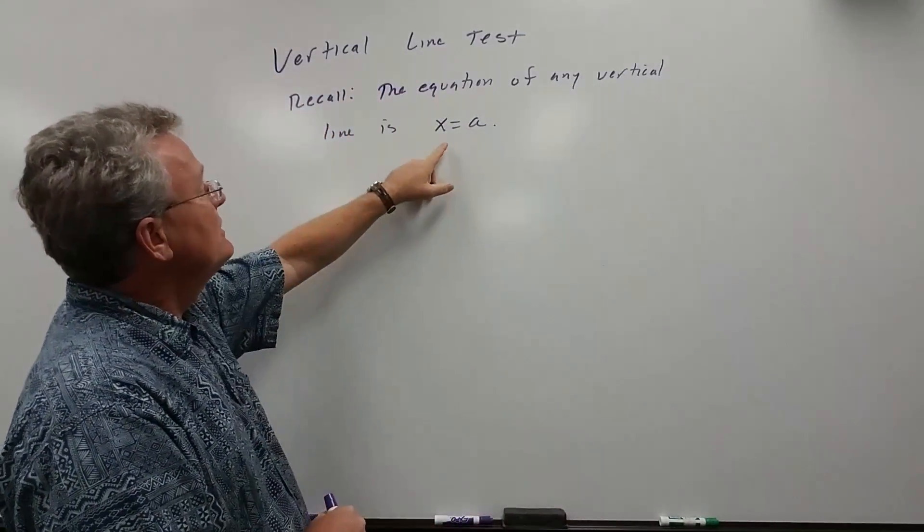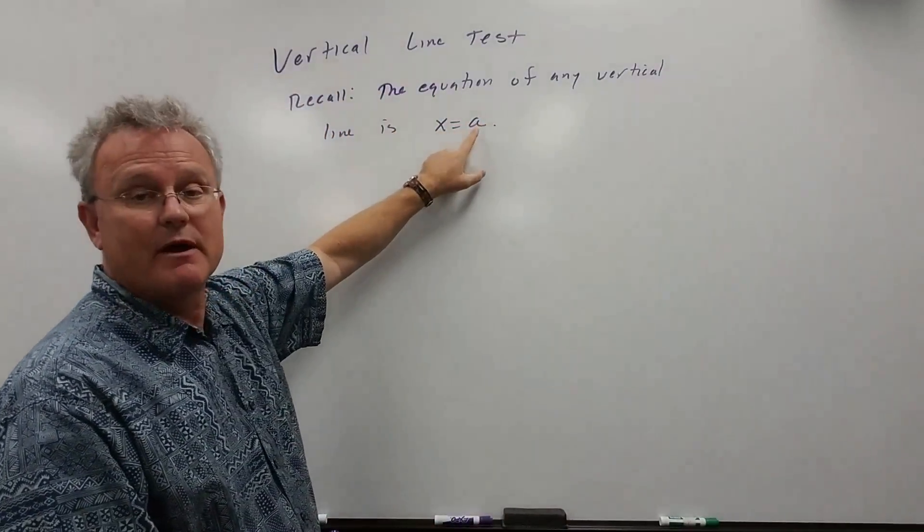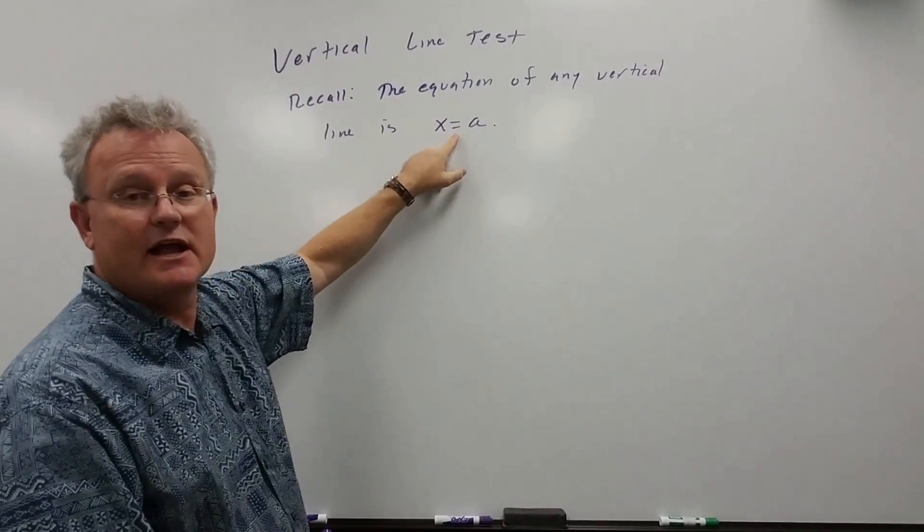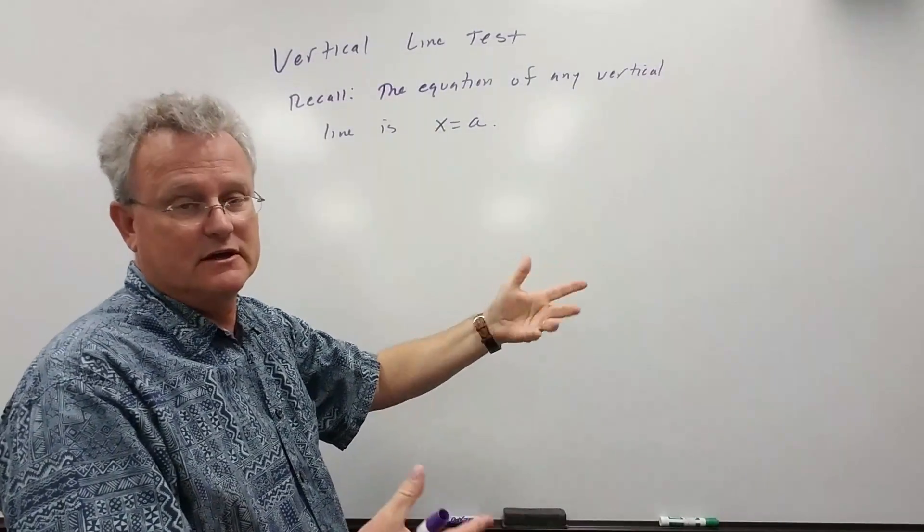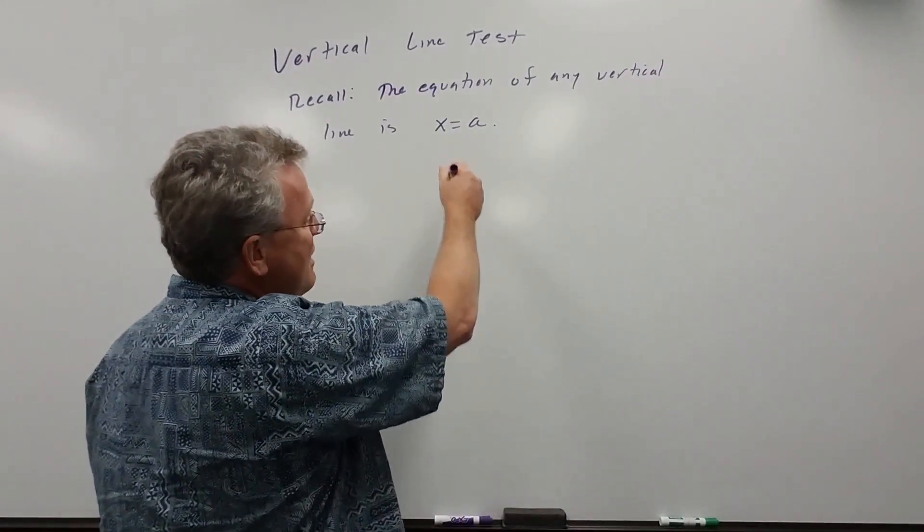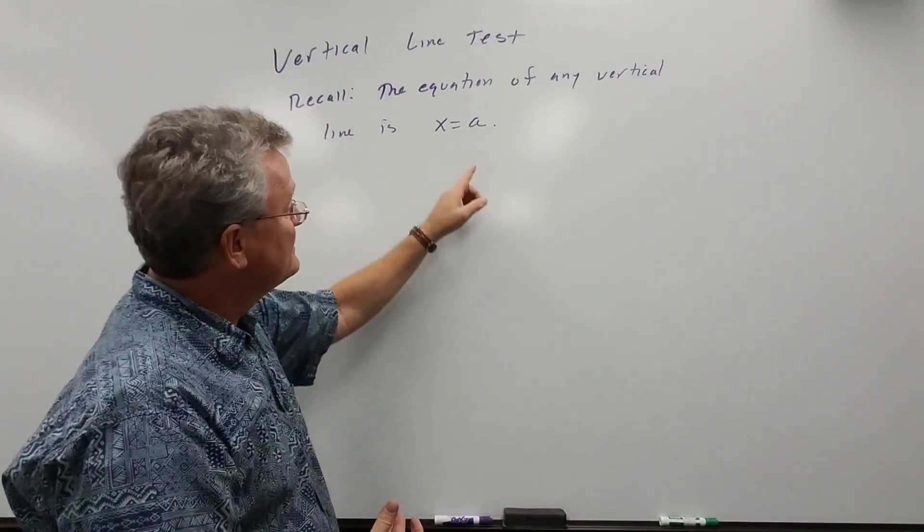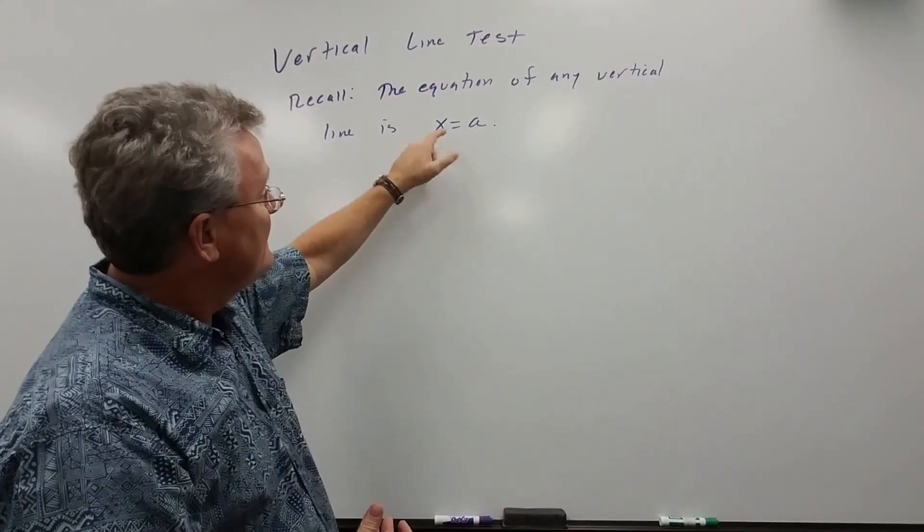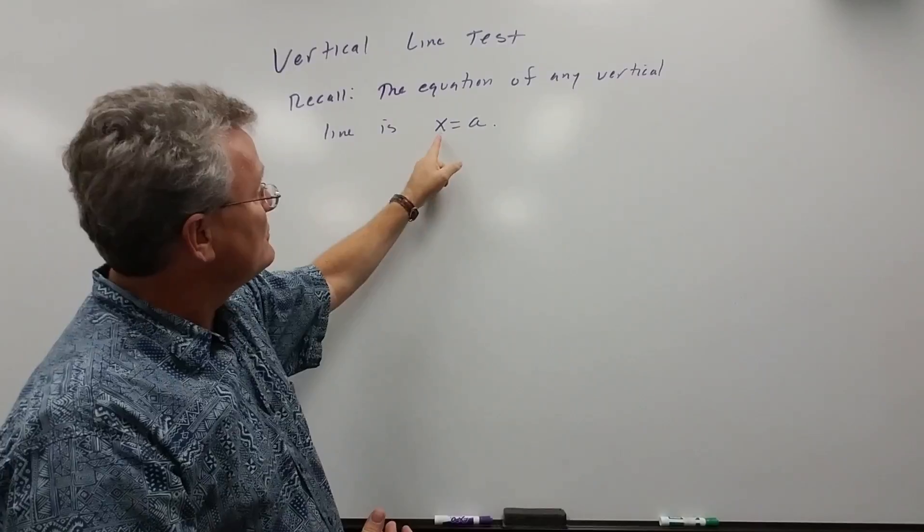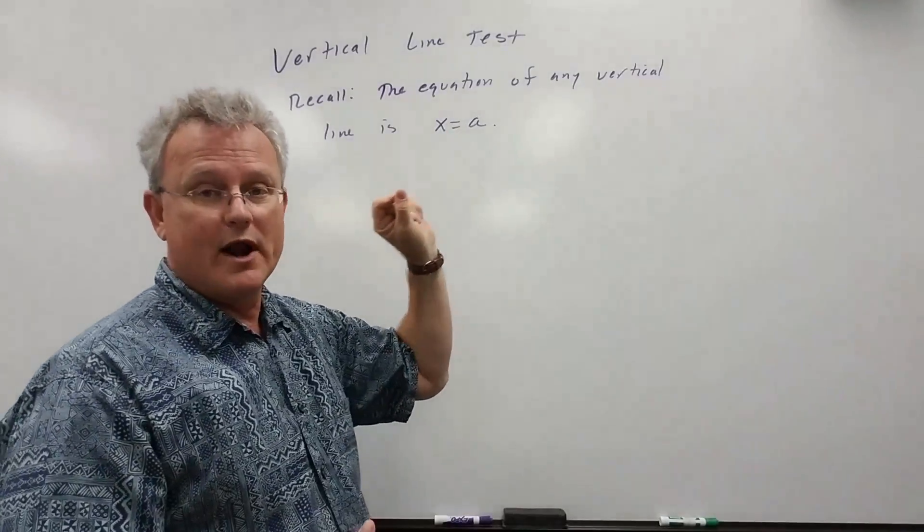It's really pretty simple. The equation, if we remember, of any vertical line is x equals a. And so when we draw a vertical line, what we're doing is every vertical line represents one x value.